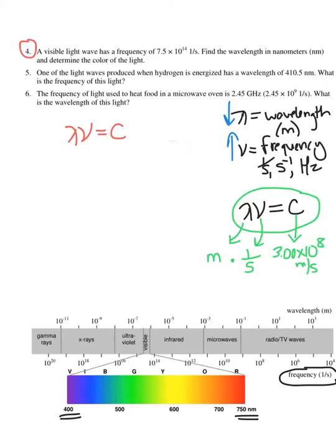When I'm plugging into this equation, I know c — I can look it up, it's in meters per second. I know the frequency given in the problem statement, and I can solve for lambda. You can do this one of two ways: either rearrange the equation to solve for lambda first, dividing both sides by frequency to get lambda equals c over frequency, and then plug in — or plug in with units to start and then rearrange. Your choice.